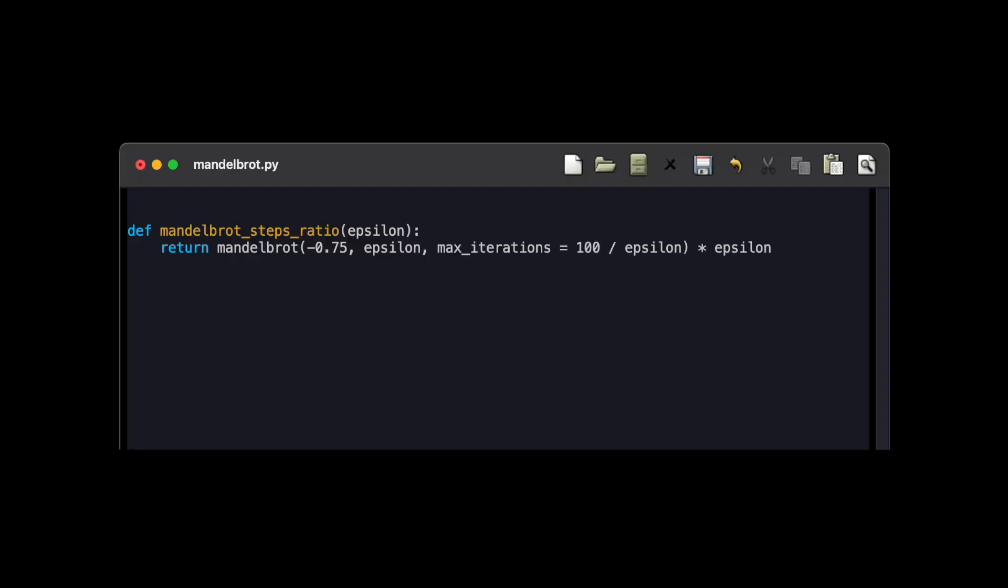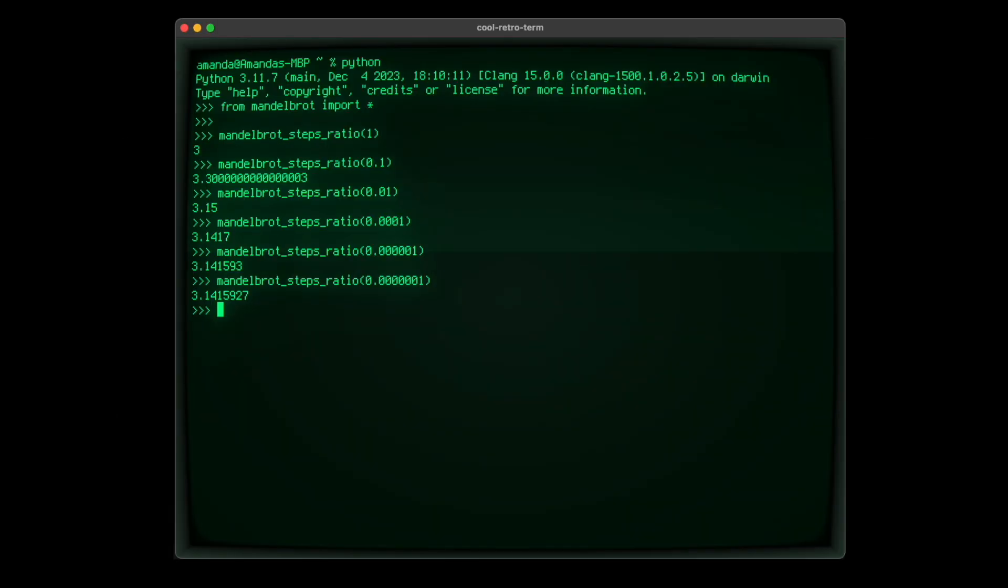We can write another function to demonstrate this, multiplying the argument epsilon by the number of iterations returned by our Mandelbrot function. With smaller values, we get closer and closer to pi.